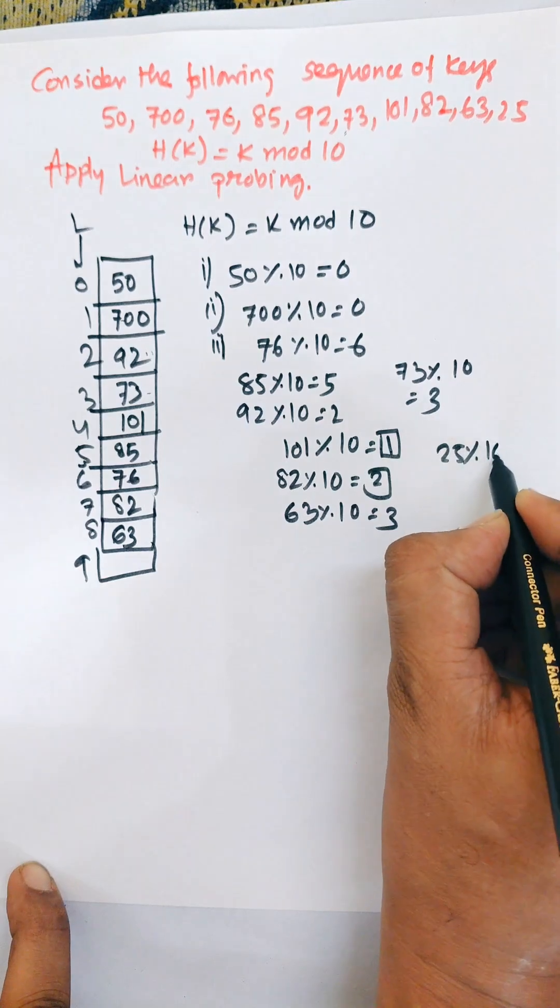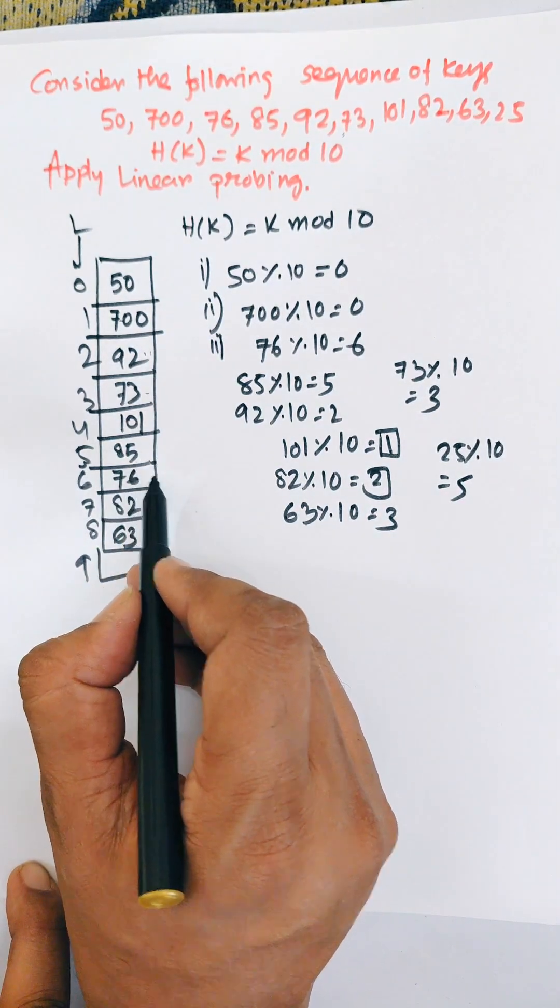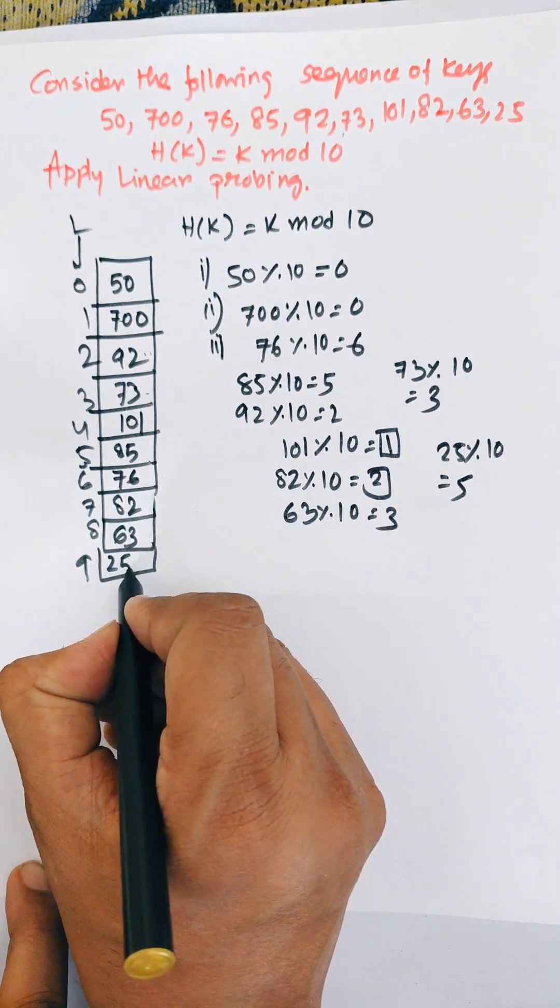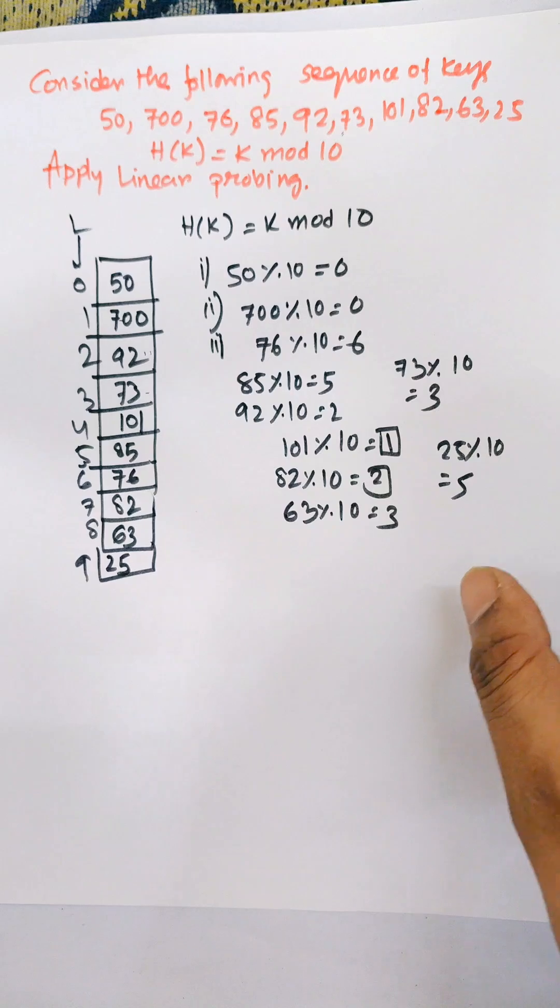Now 25. 25 mod 10 equals 5, but 5 is already occupied. The next location is also occupied, next, next. So 25 will allocate in this ninth location. In this way, we perform linear probing.